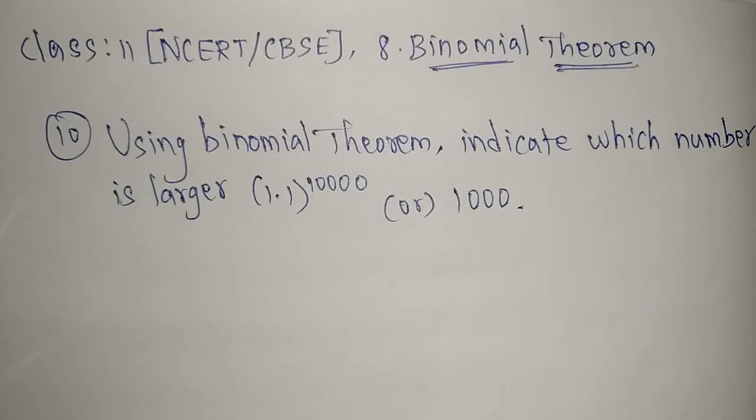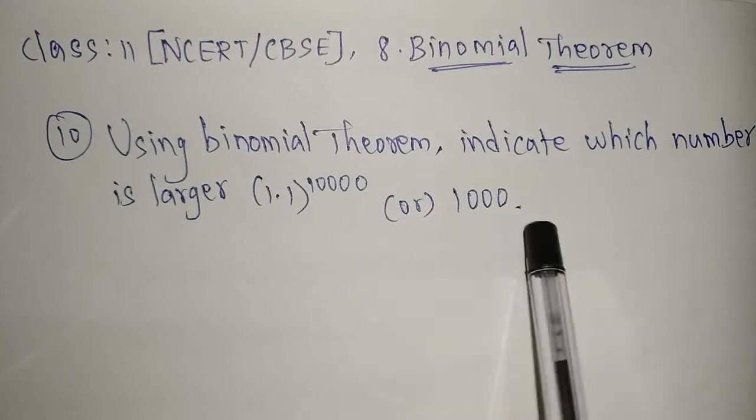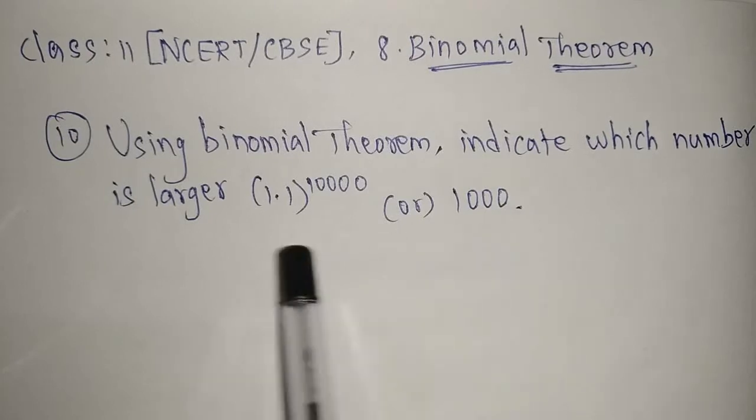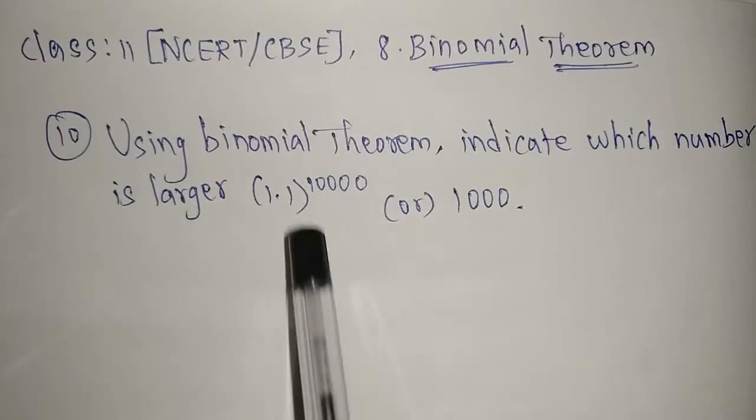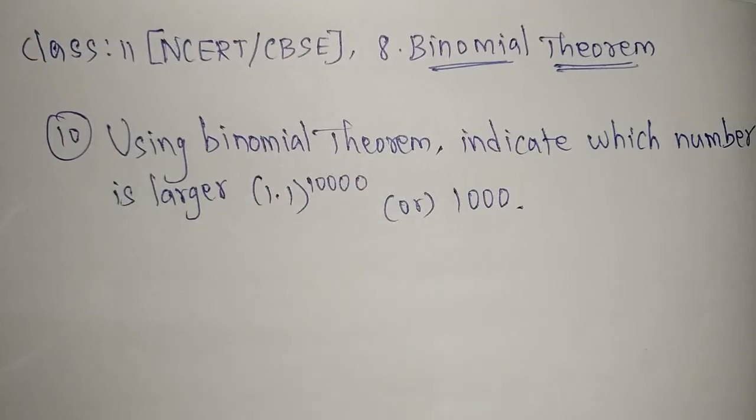Which one is greater? We have to check. This is a fixed number, 1000, so here no problem. But for this (1.1)^10000, this only you have to simplify. The power we have is 10000, so I'm going to use the binomial theorem.